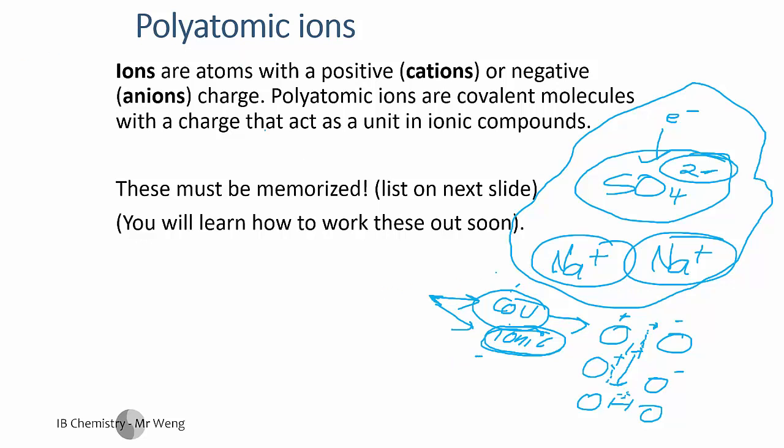So I hope that's blown your world away. Alright, so polyatomic ions are covalent compounds with a charge, so they can now form ionic compounds as well. You have to memorize them.